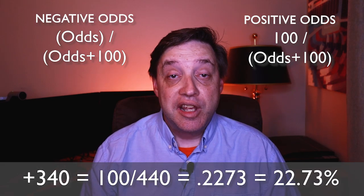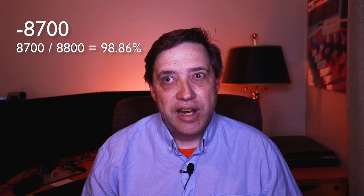It's really as easy as that, and this works no matter how big the odds get. So for instance, if you had minus 8700, that's 8700 divided by 8800, and I think that would equal 98.86% probability — just kind of did that on top of my head.